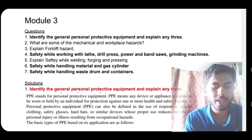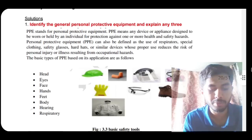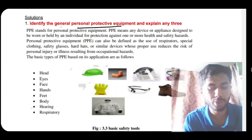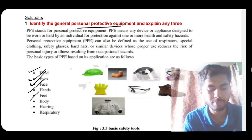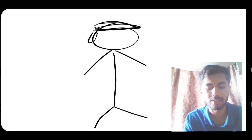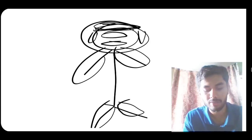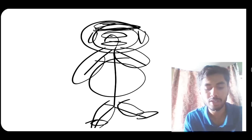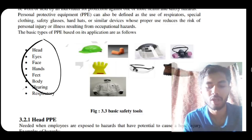Module three covers mechanical things and general PPE. First important question: identify the general personal protective equipment (PPE). The parts of the body to protect are: head, eyes, face, hands, feet, body, hearing, and respiratory. To remember this, imagine yourself from top to bottom — head, ears, eyes, mouth, face, hands, legs, feet, body, and nose for respiratory protection. Same things are listed in order from top to bottom.